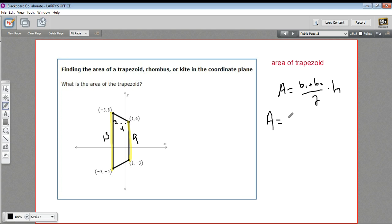Let's start putting those in there. So 13 plus 9 divided by 2 times a height of 4. So 13 plus 9, 22 divided by 2 is 11, times 4. And that's going to equal 44 square units. So that's how to find the area of a trapezoid or a rhombus or a kite in the coordinate plane.